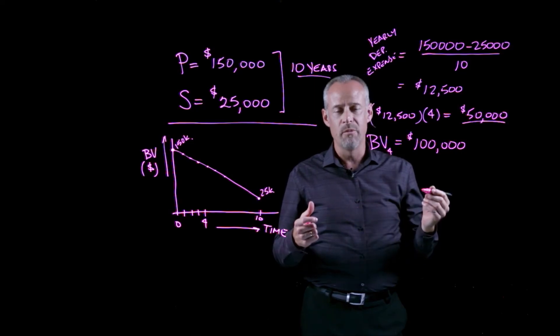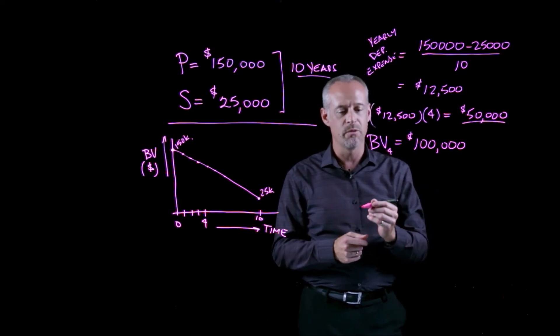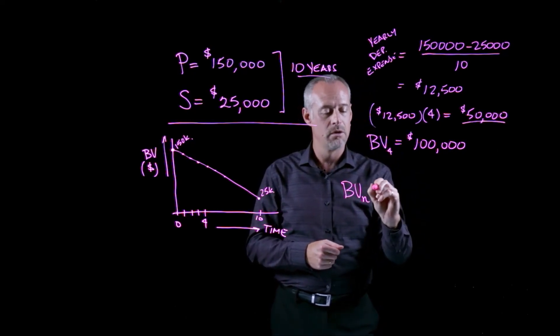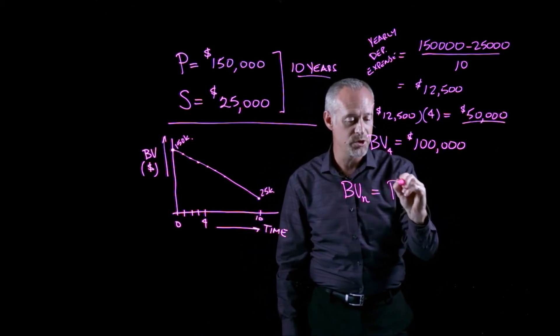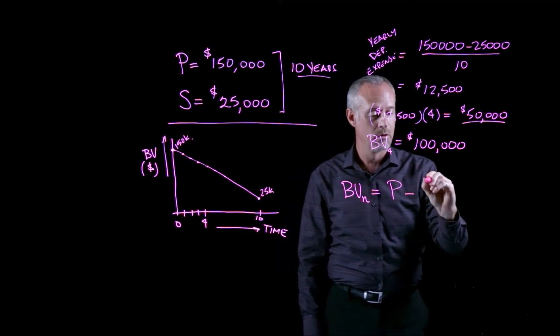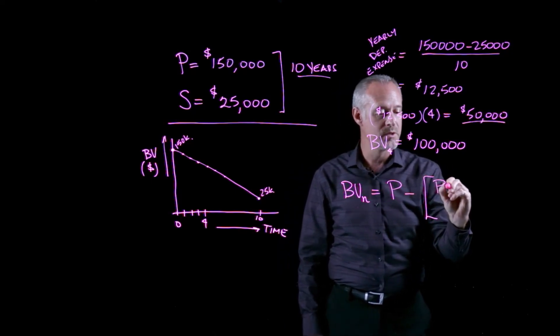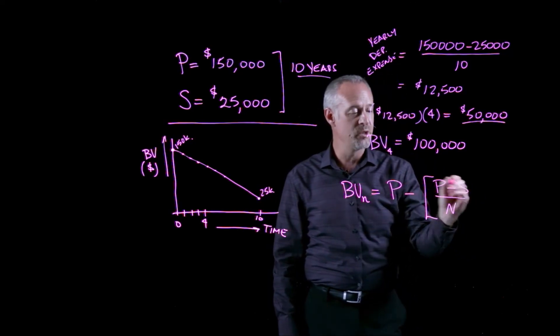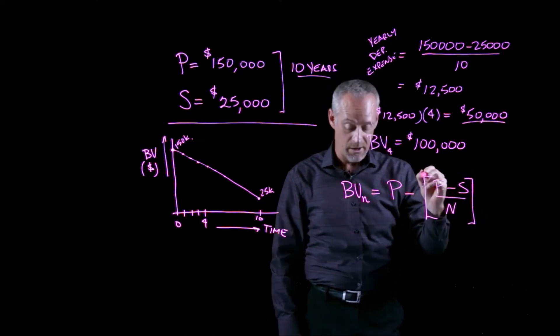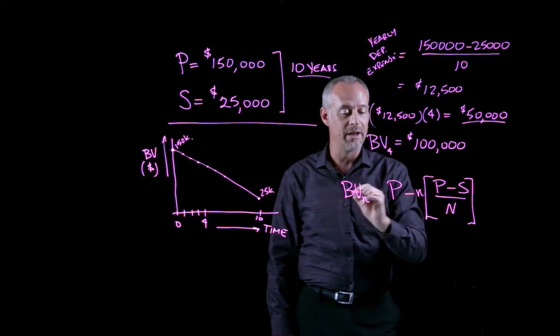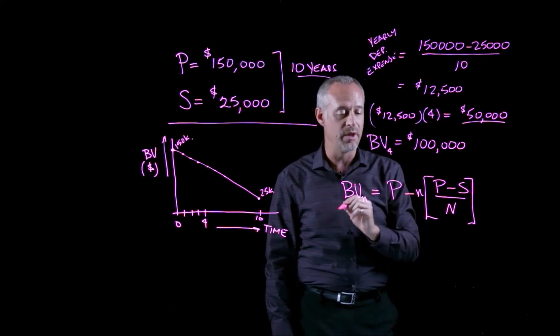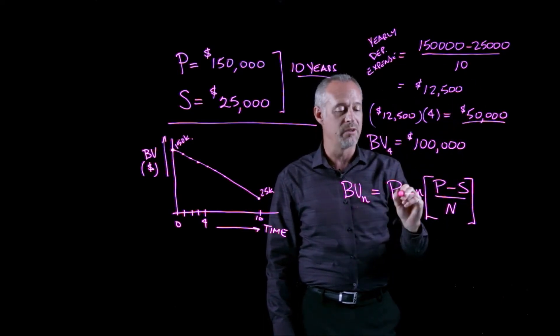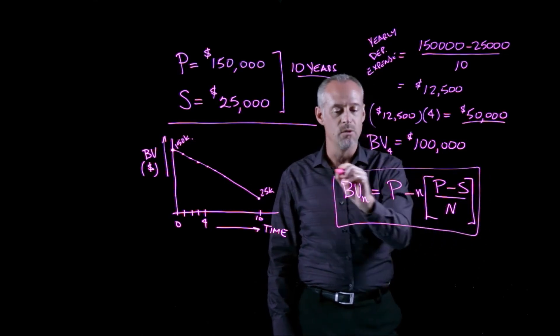Now, the way that you may see formulas written for straight-line depreciation in books, you may see a formula that says the book value in year N is going to be equal to whatever the purchase price is minus the purchase price minus the salvage value divided by the time between the purchase price and the salvage value, and all of this multiplied by N, where N is the end of the time period that we're interested in. So this is essentially what we've done in doing this calculation, but if we want to generalize it as a formula, you could write it like this.